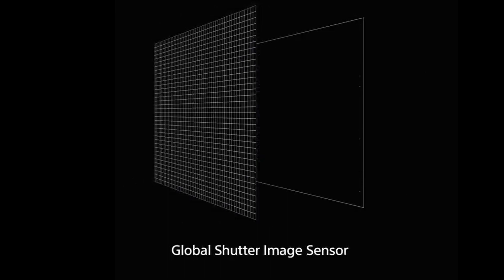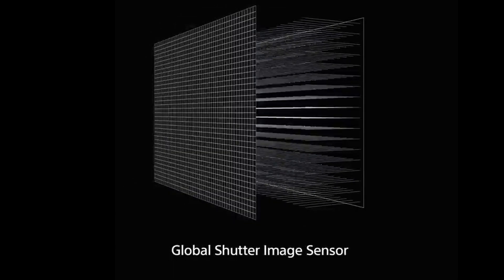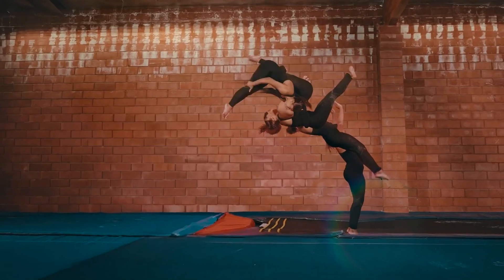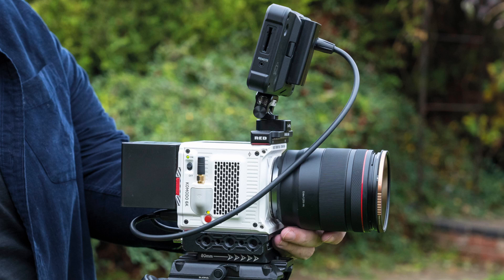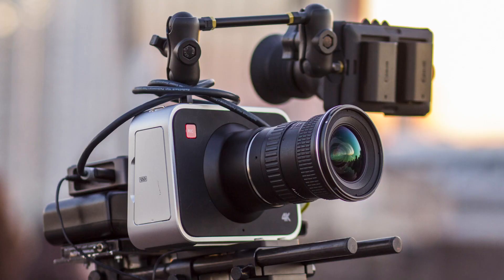In a global shutter camera, all the pixels are activated simultaneously as soon as you press the shutter button. So if you ever capture a high-action subject with a global shutter camera, you will never see distortion in the image. Before this camera, the global shutter was only available in select high-end cameras, mostly cinema cameras — for example, the Red Komodo, the Sony F35 (an older camera), and the Blackmagic Production Camera. And this global shutter comes with lots of benefits in the A9 Mark III.